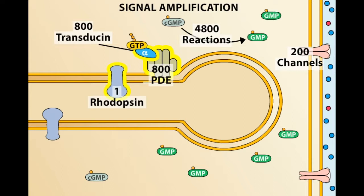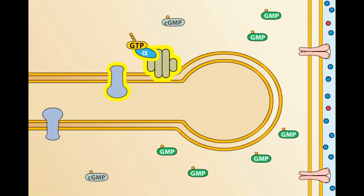Proteins in the photoreceptor limit the duration of this amplifying cascade and restore the various molecules to their inactivated states. Activated rhodopsin is rapidly phosphorylated by rhodopsin kinase, which permits the protein arrestin to bind to rhodopsin. Bound arrestin blocks the ability of activated rhodopsin to activate transducin, thus effectively truncating the phototransduction cascade.